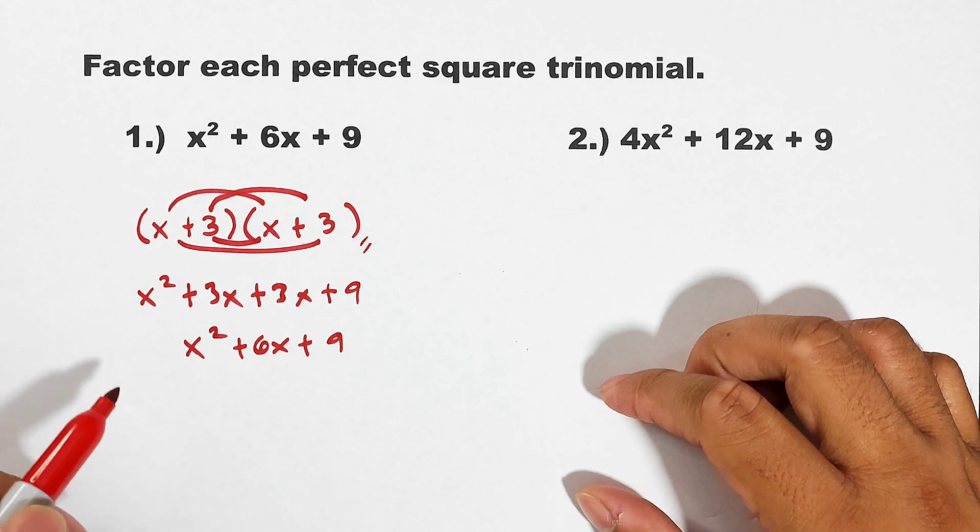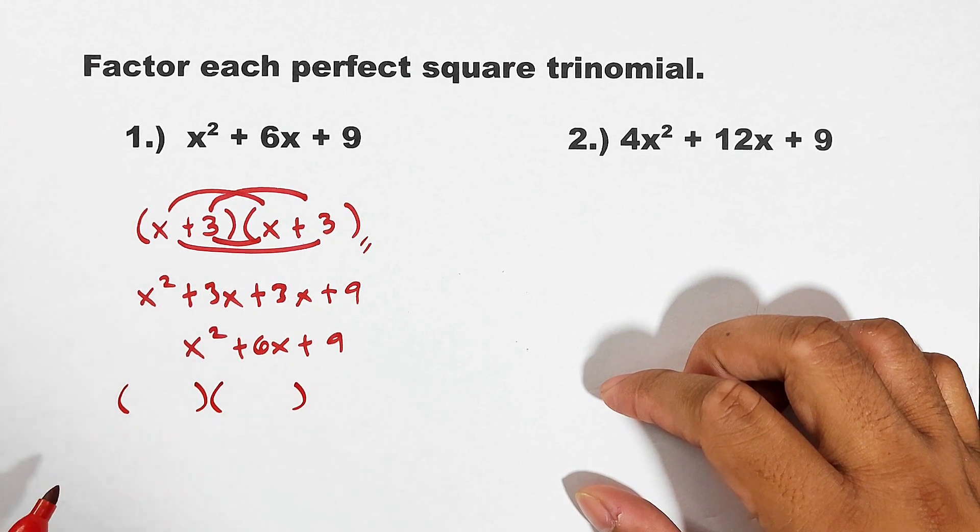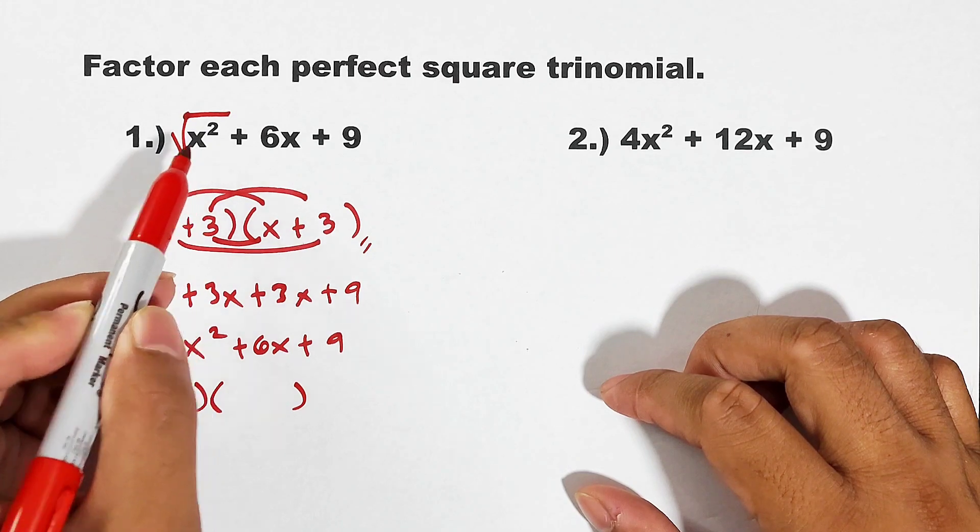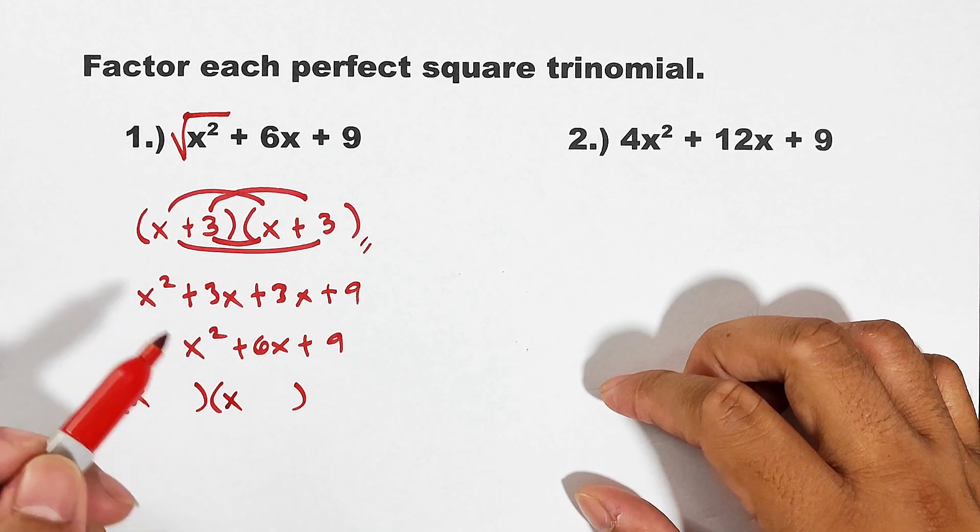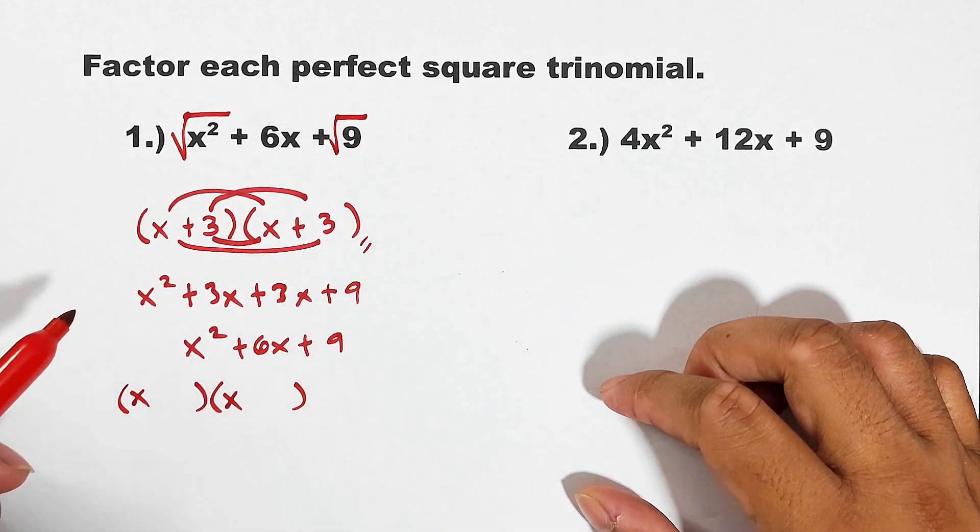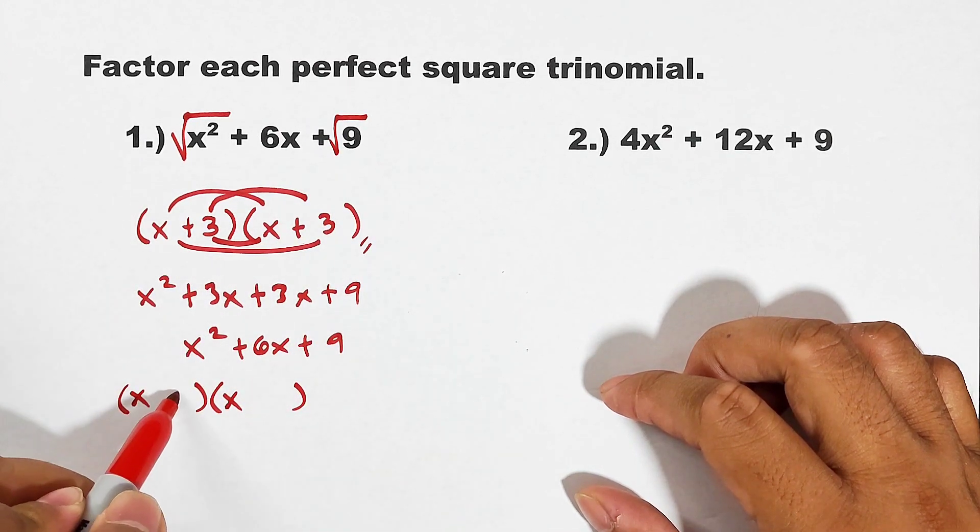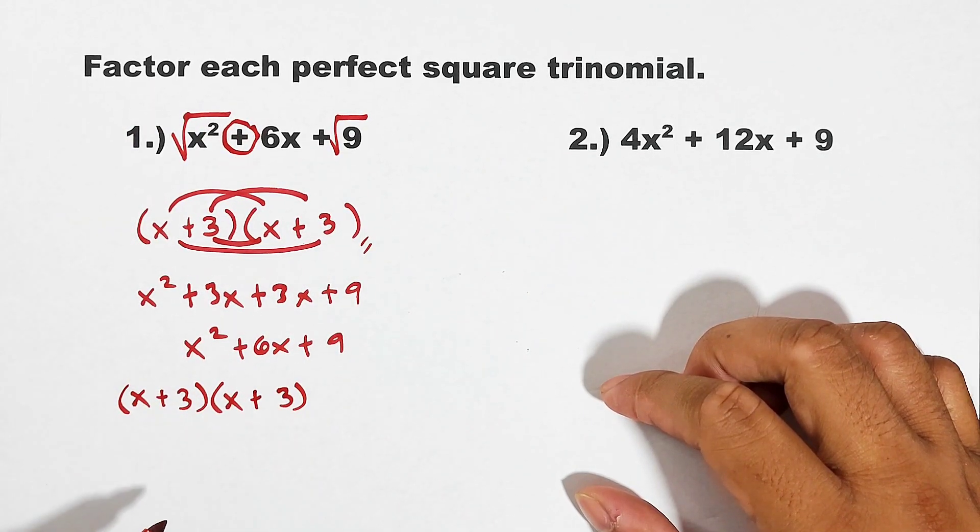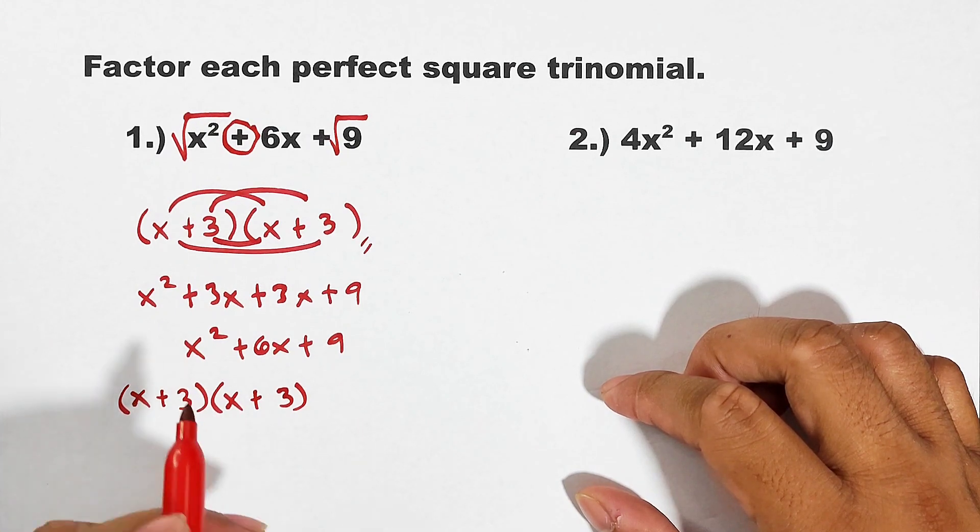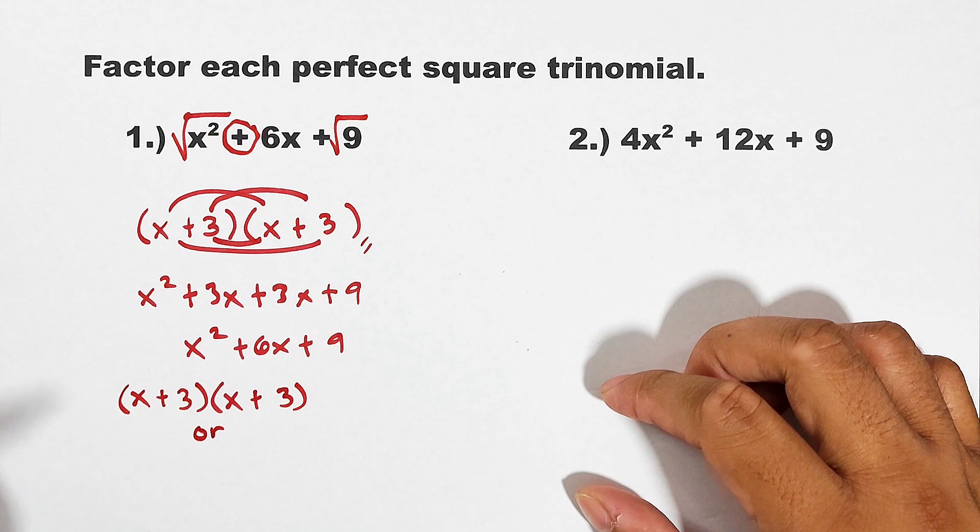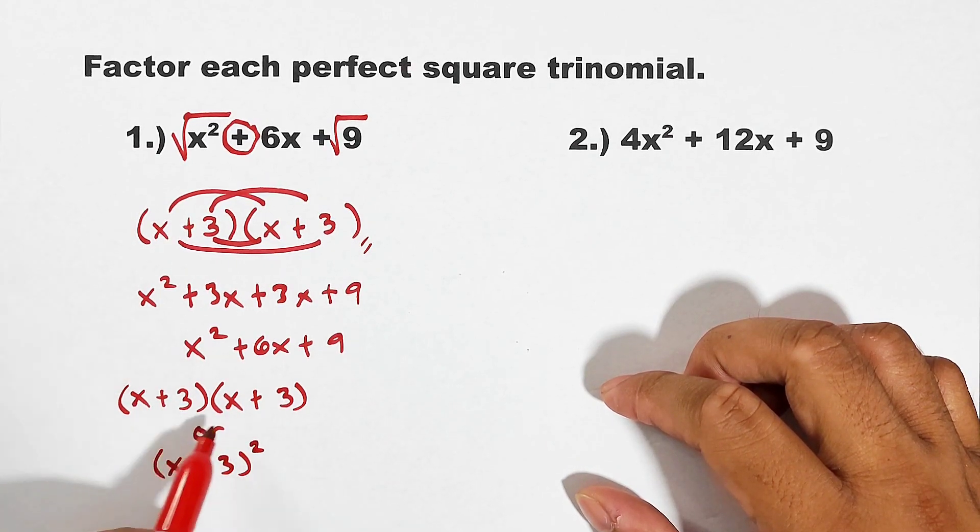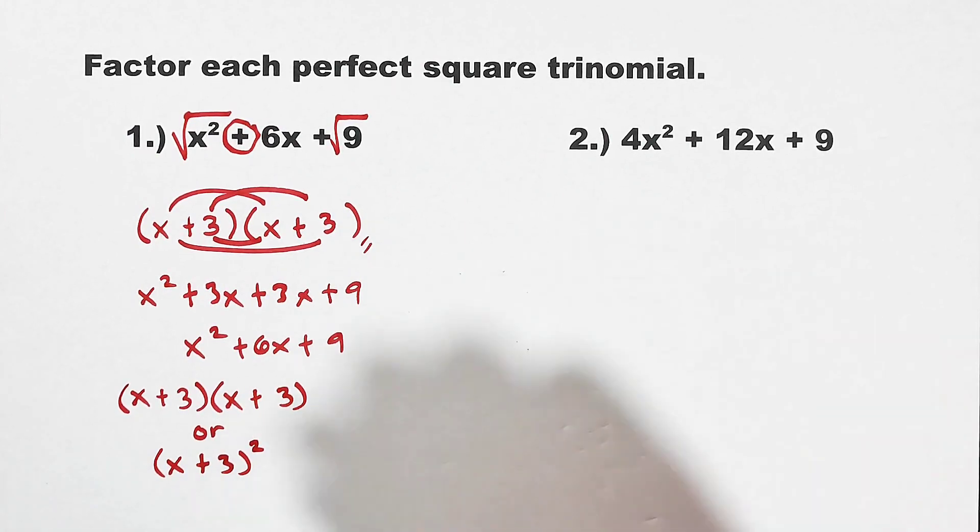First, prepare two parentheses. Then get the square root of the first term. What is the square root of the first term x²? The square root of x is x. Lastly, get the square root of the last term or the constant. The square root of 9 is 3. Copy the middle sign, that is plus. And actually, we can express these factors as square of binomial since they are the same. So the factors or the answer is simply (x + 3) raised to the second power.